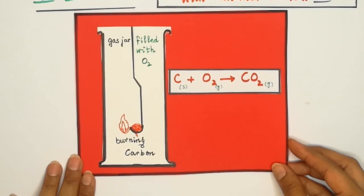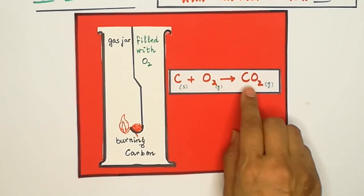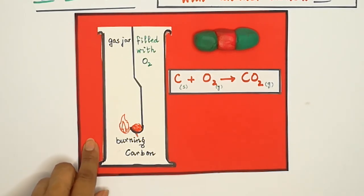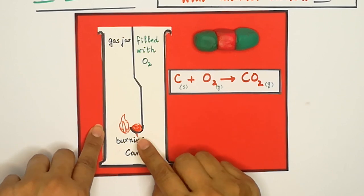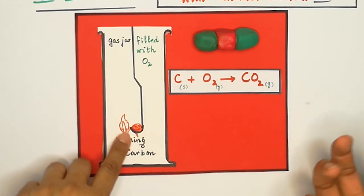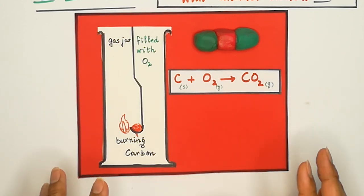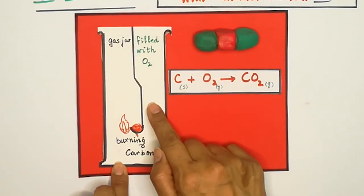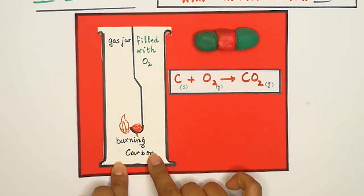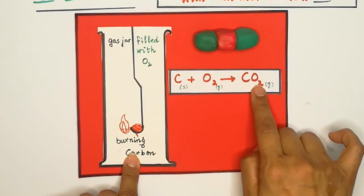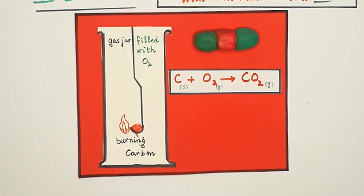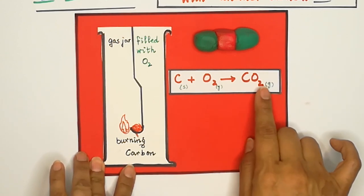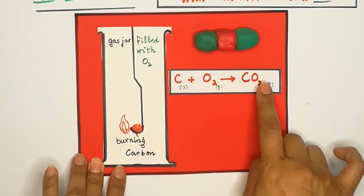When the non-metal carbon reacts with oxygen, it forms carbon dioxide. Powdered carbon is heated over a Bunsen burner until red hot, then plunged into a gas jar filled with oxygen, and carbon dioxide gas is formed. Carbon dioxide gas is identified using lime water — when lime water turns milky, we confirm carbon dioxide gas is formed.